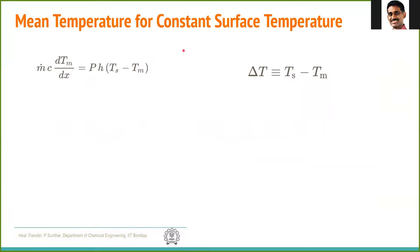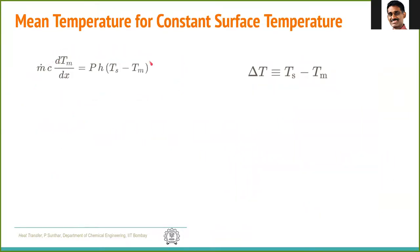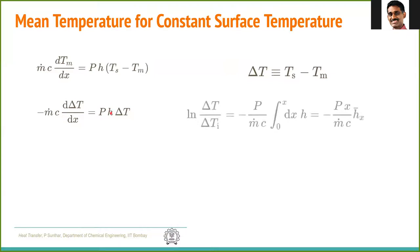Now let's look at the second condition: constant surface temperature. The same differential equation holds, but conditions are different. Instead of constant Q″, we define a new variable ΔT = Ts minus Tm, and rewrite the differential in terms of ΔT. So dT/dx becomes d(ΔT)/dx with a minus sign, and the equation becomes d(ΔT)/ΔT times H. Since Ṁ·C, P, and H are involved, and only H is a function of X, we can integrate this.